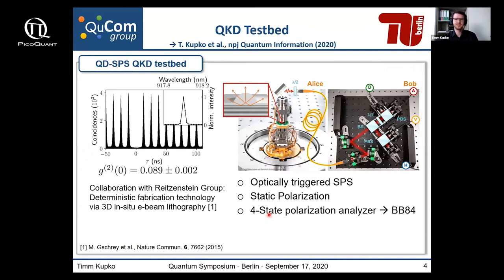In our QKD testbed, on the sender side we have a quantum dot single photon source embedded in a microlens structure — a deterministically integrated quantum dot device. Instead of exploiting the entanglement properties of such quantum dot systems, we are using only the single photon properties. We have quite reasonable single photon purity at an emission wavelength of 980 nanometers, and we excite the quantum dots with pulsed excitation using an 80 MHz pulsed laser.